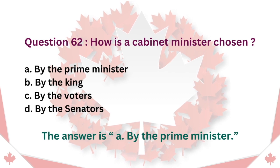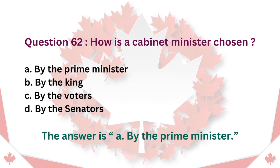Question 62: How is a Cabinet Minister chosen? A. By the Prime Minister. B. By the King. C. By the voters. D. By the Senators. The answer is A. By the Prime Minister.